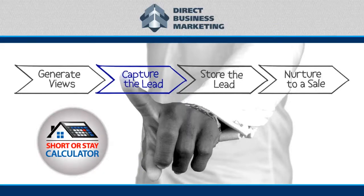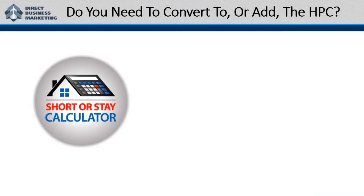Hello, this is Grandison Schein, Chief Marketing Officer here at Direct Business Marketing. Today this video is going out to all of you who have a Short Sale calculator. The objective of this video is to get you to realize that it may be time for a change — meaning that going to the sister product, the Home Profit Calculator, may be a better solution for you right now. What we're finding is that the market is changing in a lot of different areas, so the question becomes: do you need to convert or add the HPC to your marketing campaign?